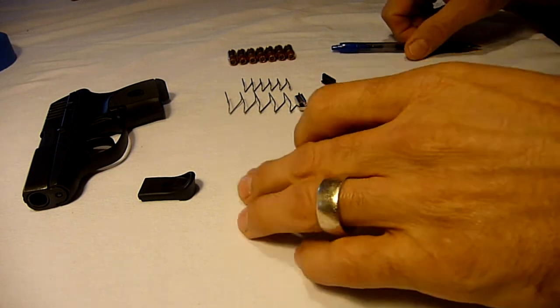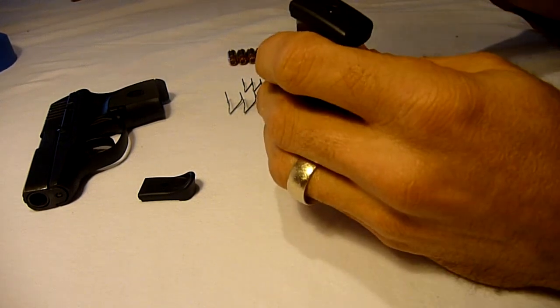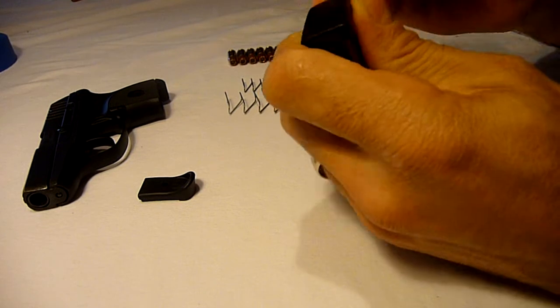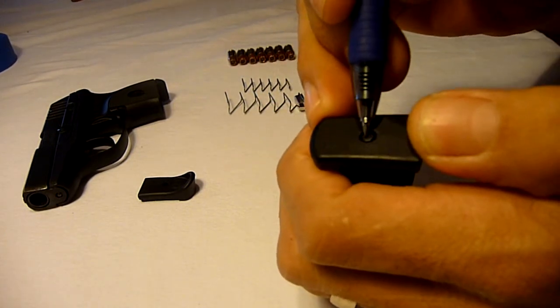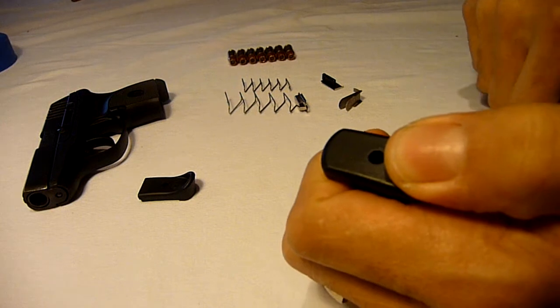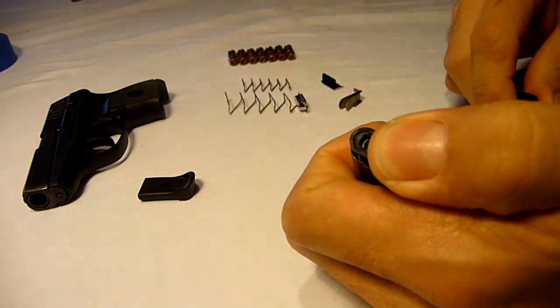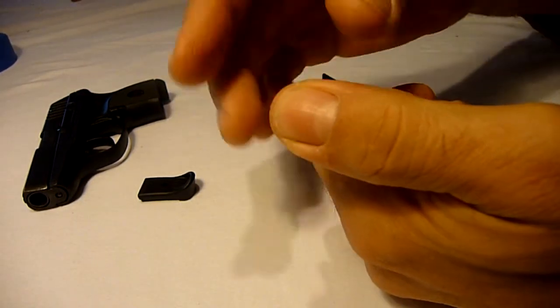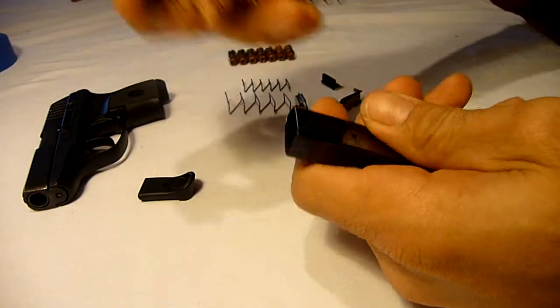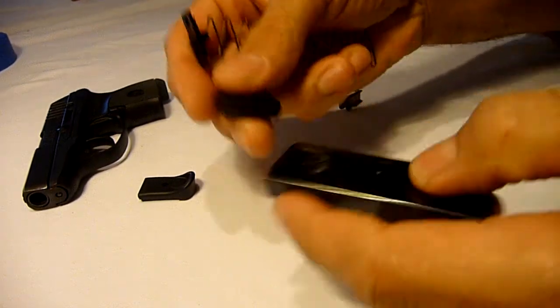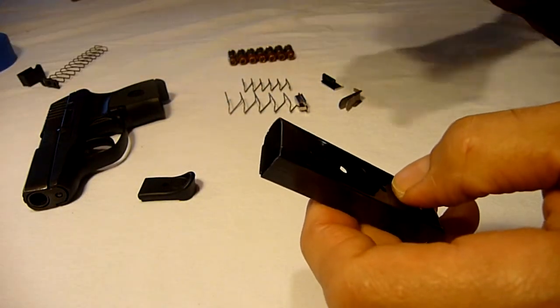Remove your factory base plate by pressing the release tab with a narrow object. I'm using a pen. Slide the base plate off the magazine while holding the spring to keep it from ejecting. Remove the lock plate and spring and the original follower. Set them aside because we won't need them anymore.